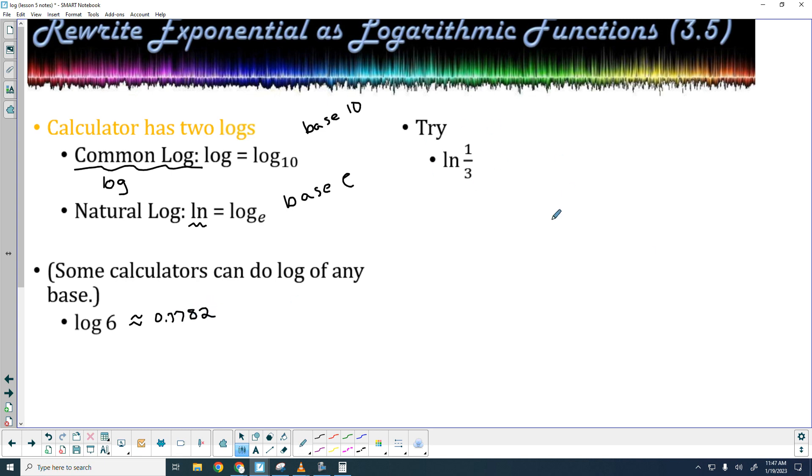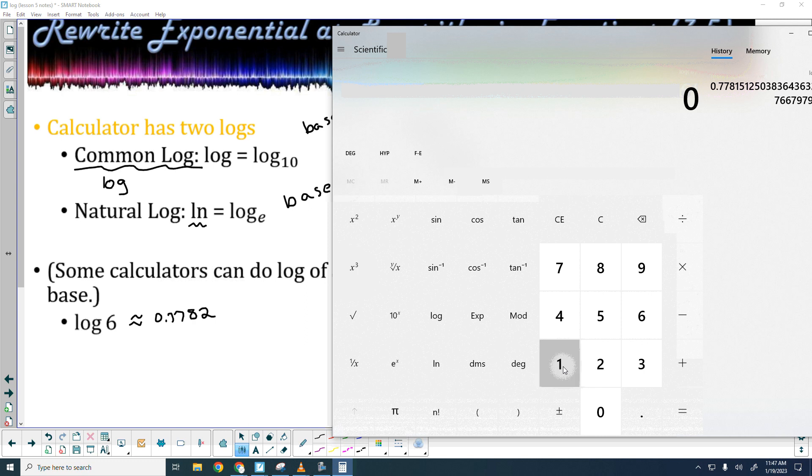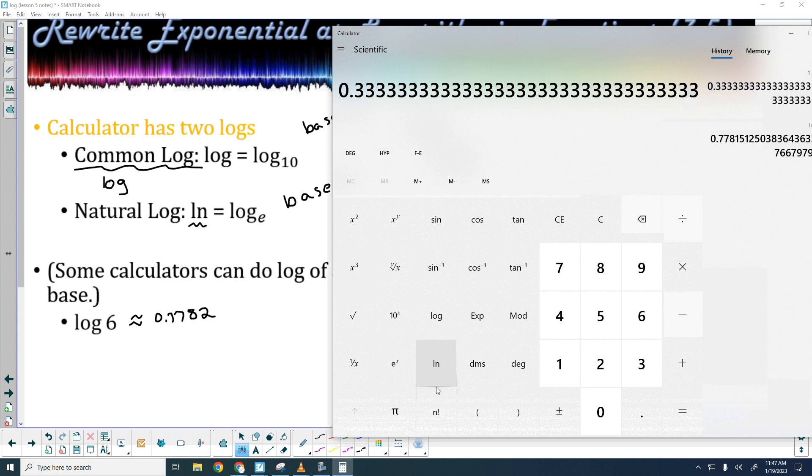All right. Let's go ahead and try the natural log of 1 third. I'm going to clear that out. I'm going to do 1 third first. And again, it really depends on your calculator. And then I'm going to do the natural log of that. And I'm going to get a negative right now. Negative 1.0986.